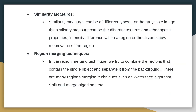Similarity measures can be of different types for grayscale images. They can include different textures and other spatial properties, intensity difference within a region, or the distance between the mean value of the region. We use these similarity measures to form the regions.